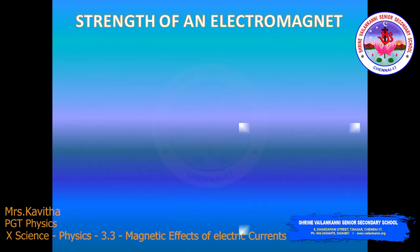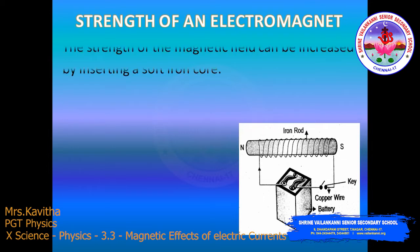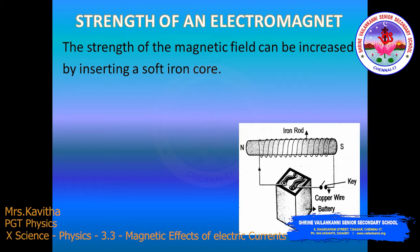Next, the strength of an electromagnet — how can we increase the strength of the electromagnet? The strength of an electromagnet can be increased by inserting a soft iron core inside the solenoid. When electric current is passed through a solenoid, the soft iron core gets magnetized and the magnetism of the solenoid increases considerably.